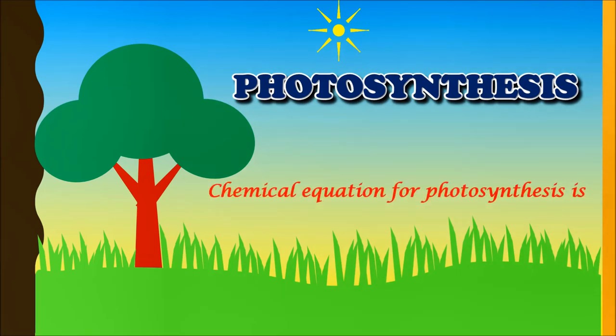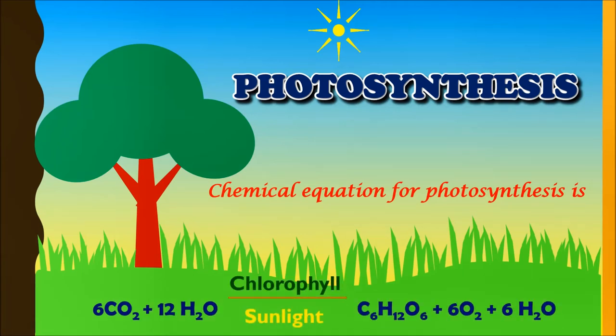The chemical equation for photosynthesis is 6CO2 plus 12H2O gives rise to C6H12O6 plus 6O2 plus 6H2O.